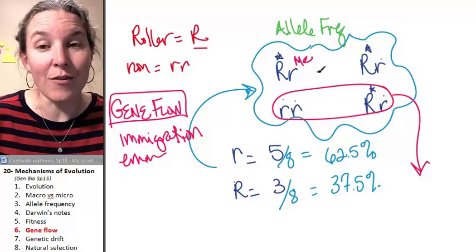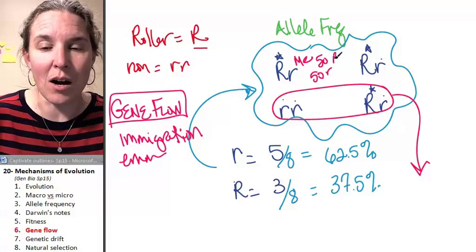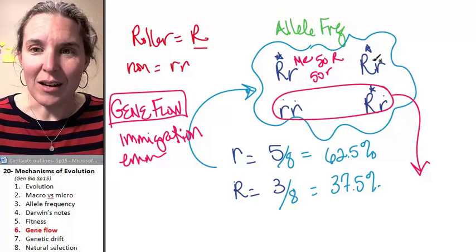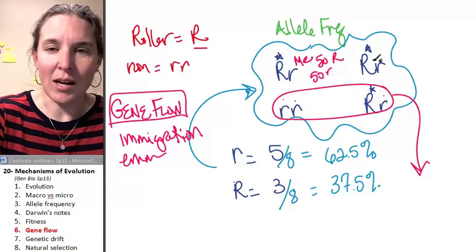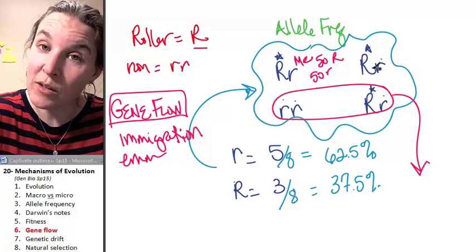Now we have 50% little r's and 50% big R's. But the fellas left. What kind of lecture is this? That is an example of gene flow.